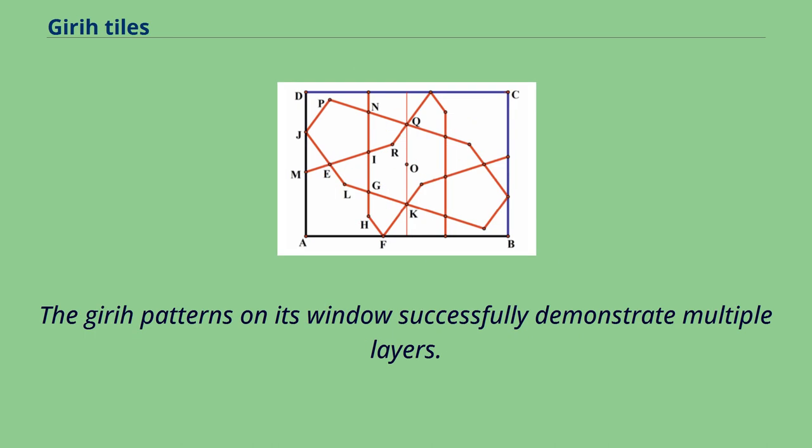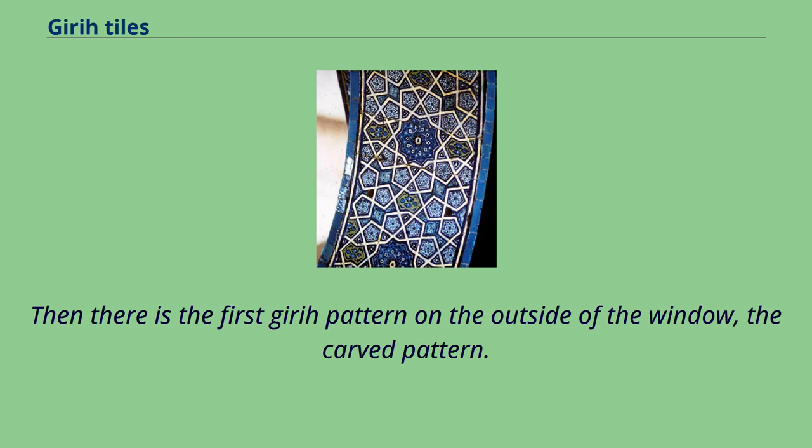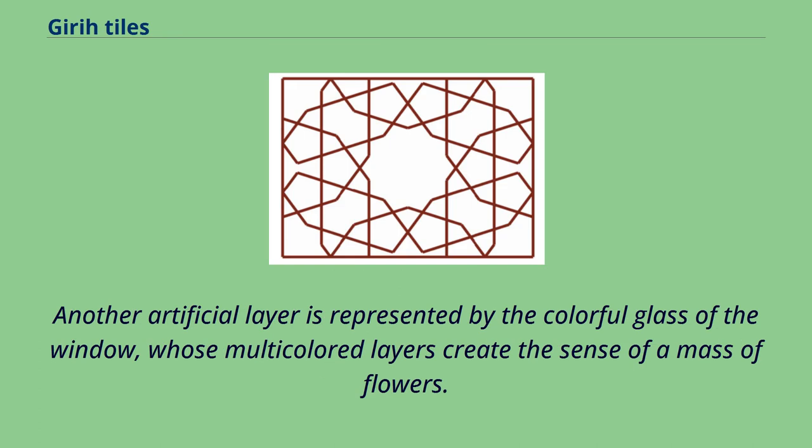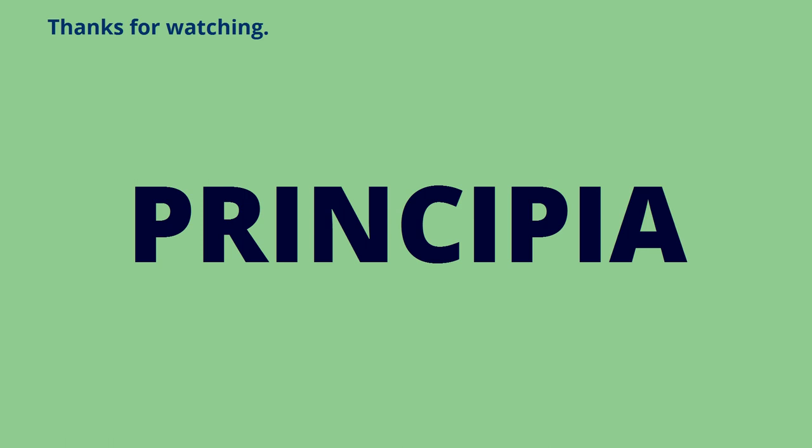A good example of this is Azad Khaliji at Dolatabad Garden in Iran. The girih patterns on its window successfully demonstrate multiple layers: the first layer would be the actual garden of which people can have a glimpse when they open the window, then there's the first girih pattern on the outside of the window—the carved pattern. Another artificial layer is represented by the colorful glass of the window, whose multicolored layers create the sense of a mass of flowers. This abstract layer forms a clear contradiction with the real layer outside the window and gives space for imagination.